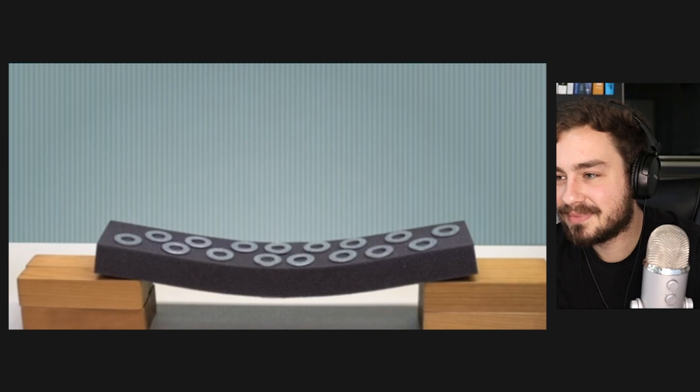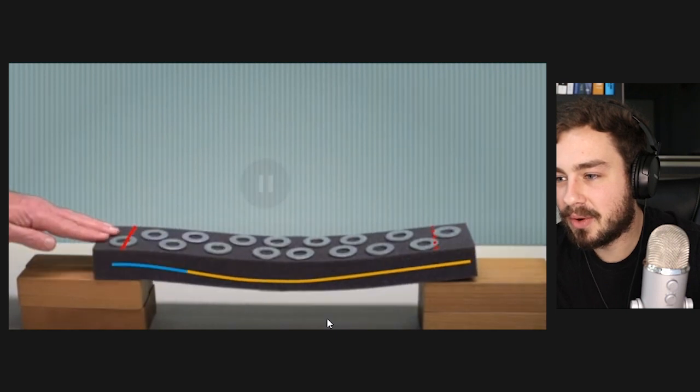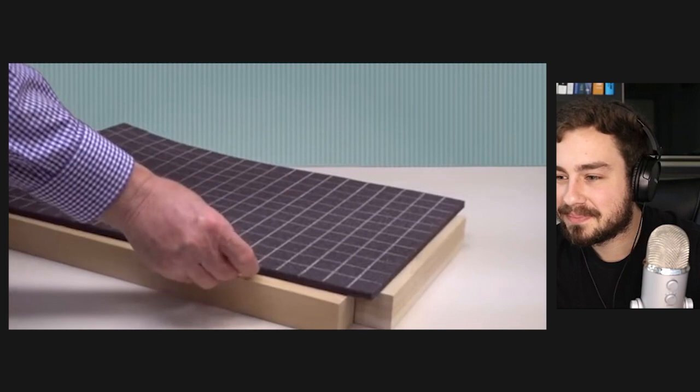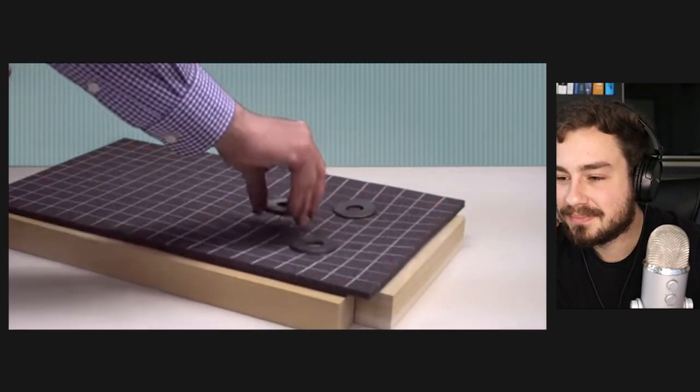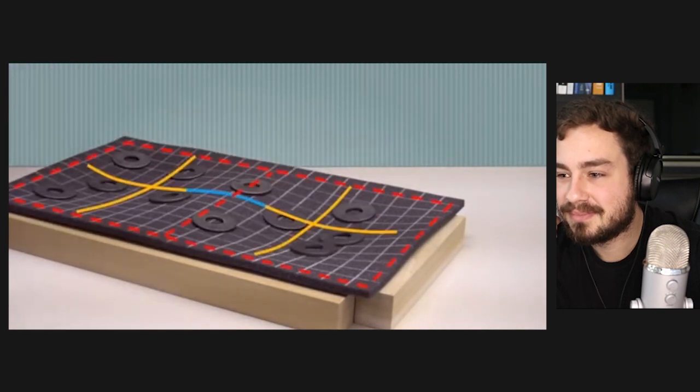The same thing would happen if one end of a beam were changed from a simple support to a clamped support. A simply supported plate that spans two bays takes this shape, and it exhibits both positive and negative curvatures.